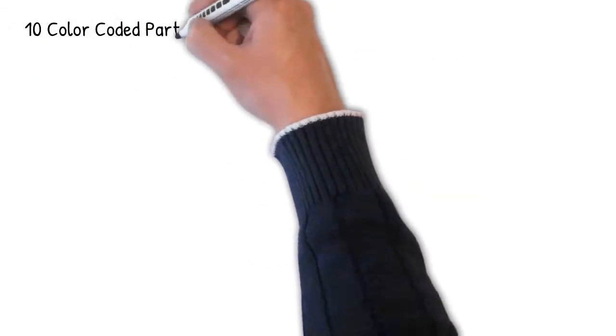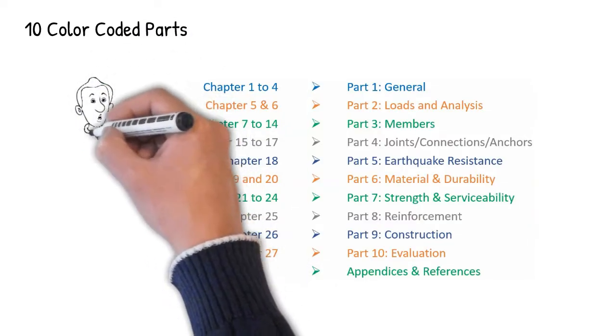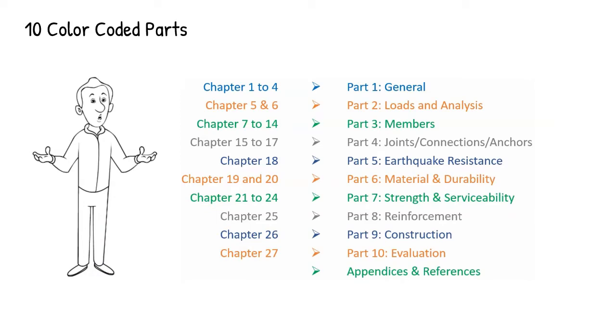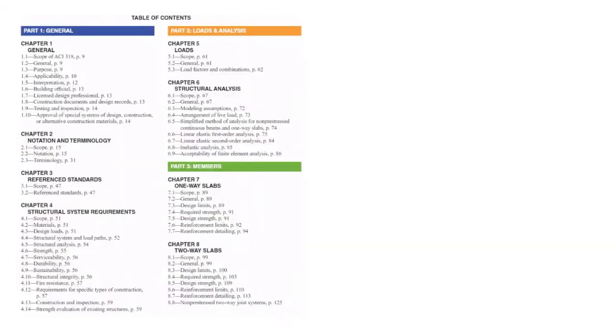If you have a color version of the code, in the table of contents you will see 10 color coded parts. Contents are arranged in an order of design sequence of the structural components. I'll talk in detail about that later and here is a quick view of the table of contents.